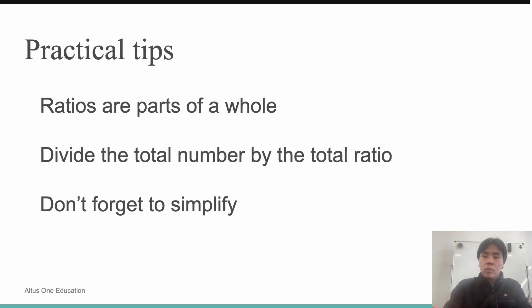Here are some tips for you to tackle some of these ratio questions. Remember, ratios represent parts of a whole. If you're given a smaller ratio, like the ones we saw today, with 1, 2, and 5 for a total of $300, you can assume that it's a mini ratio, a simplified version of the bigger ratio.